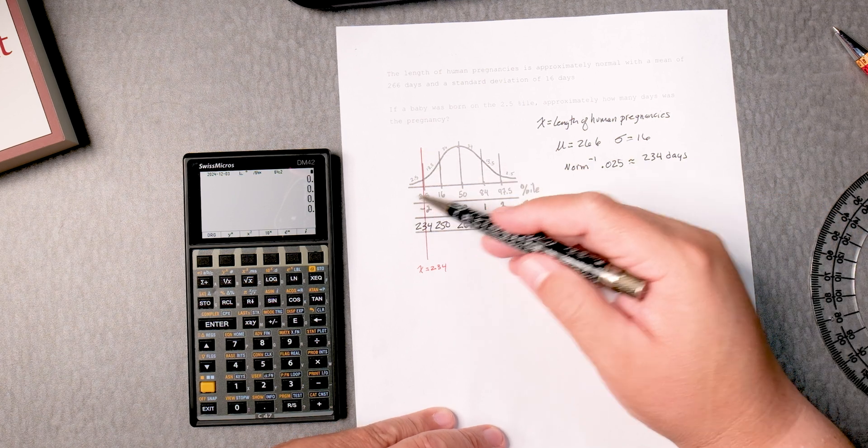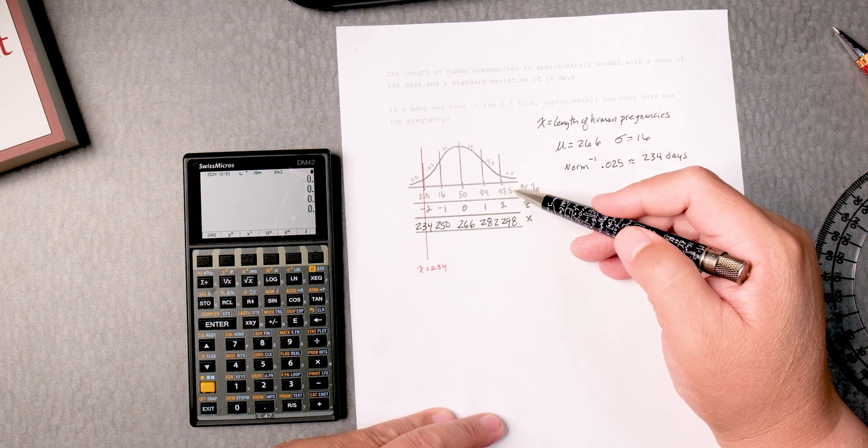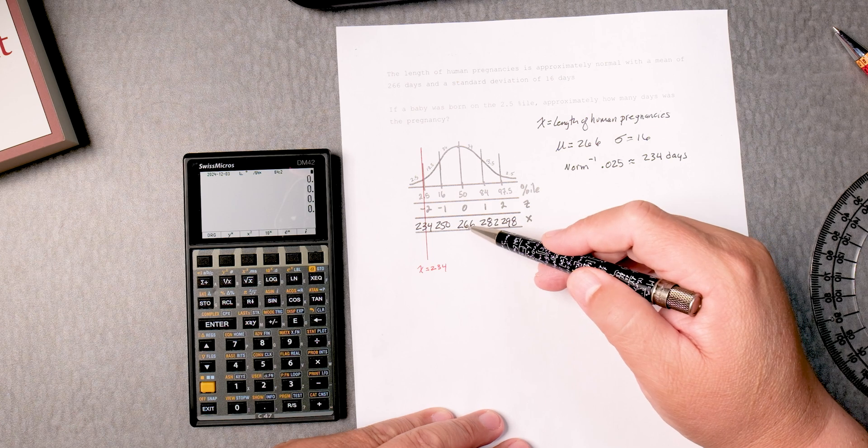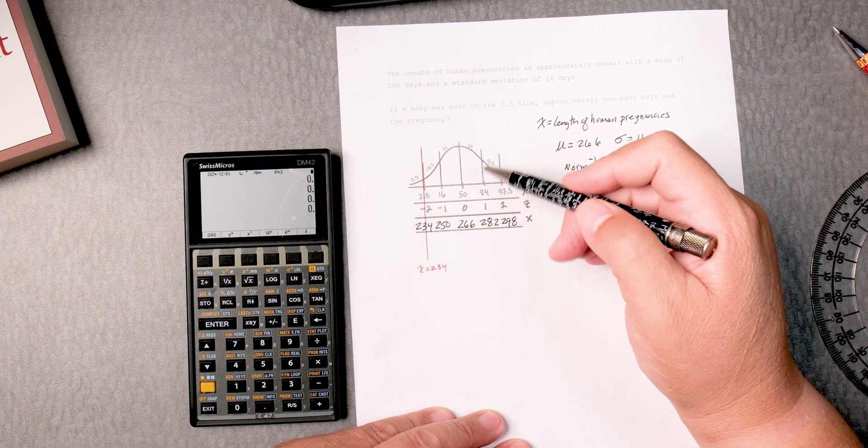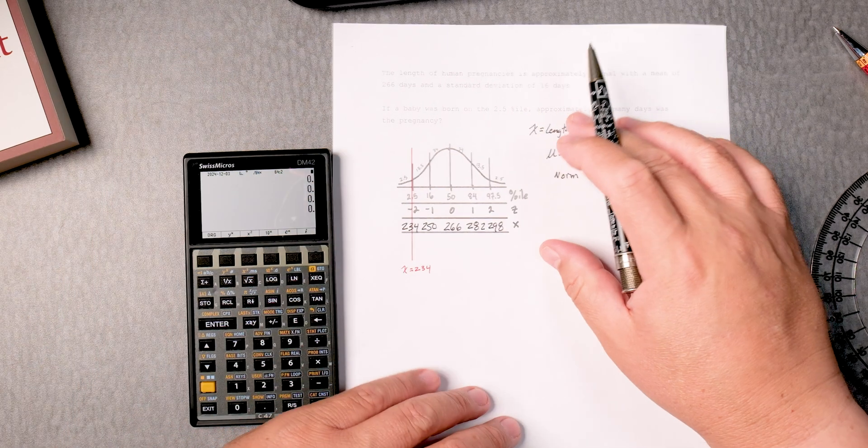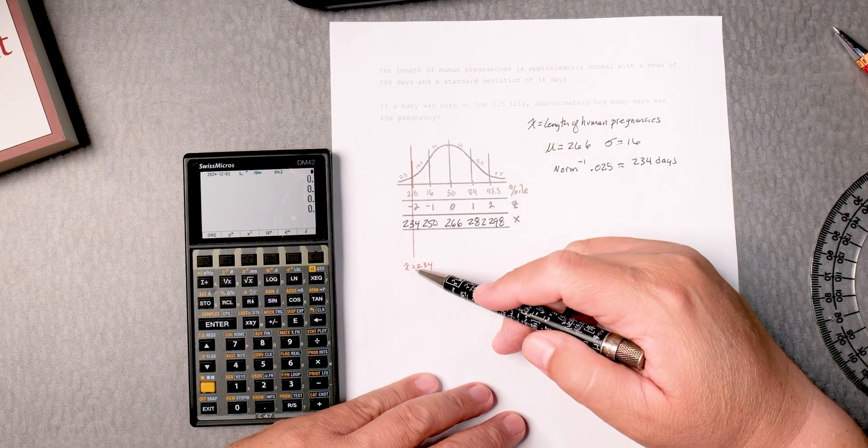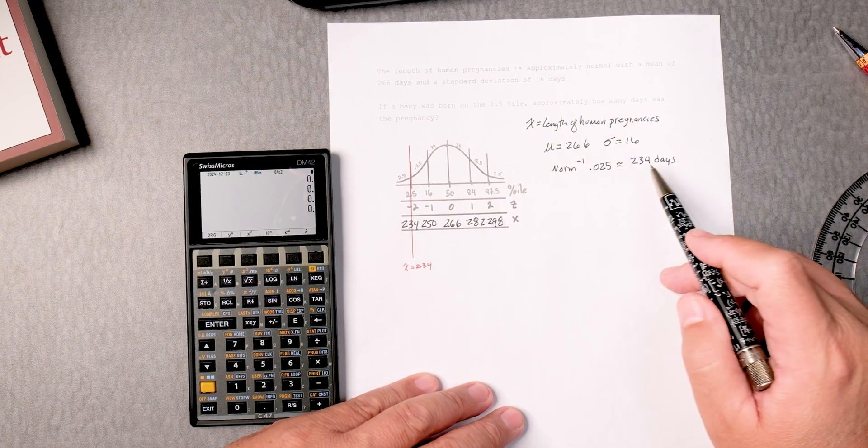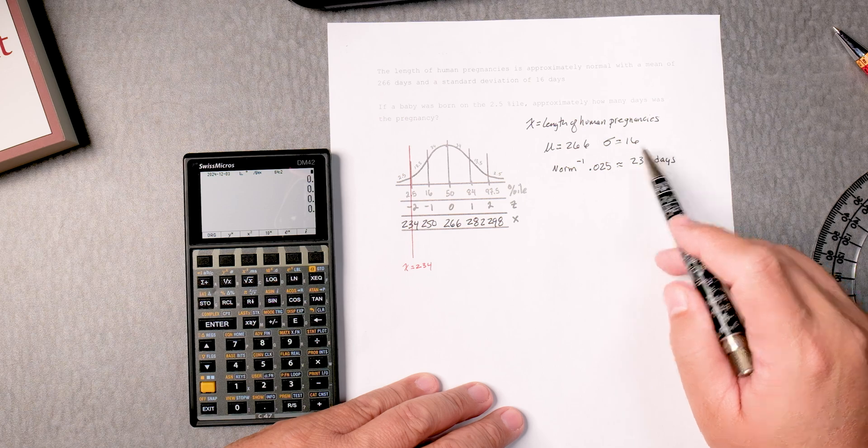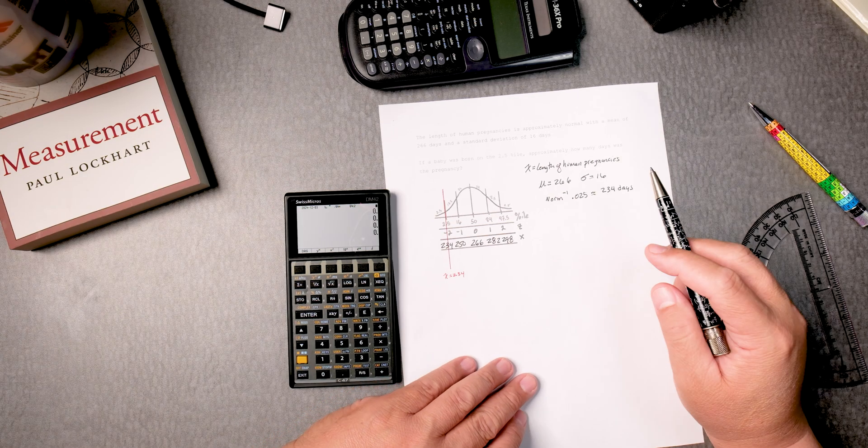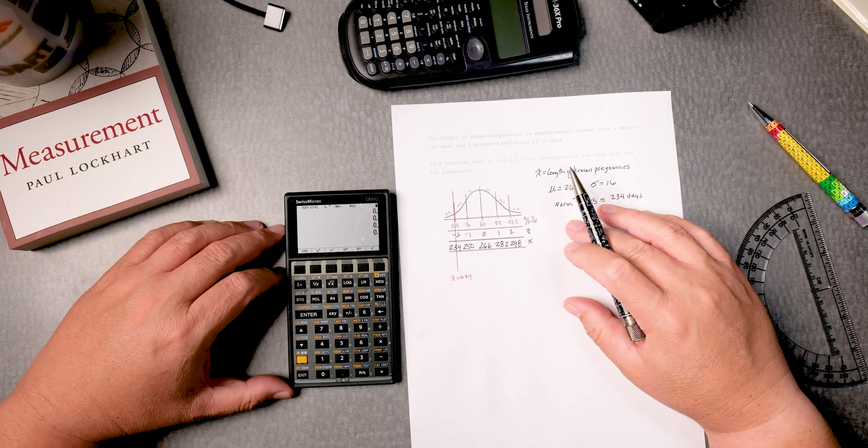With this template here, where we put 266 and the standard deviation on the empirical rule to give us a sense of the distribution, we have approximately 234 days as our answer. So how do we do that on the C47?